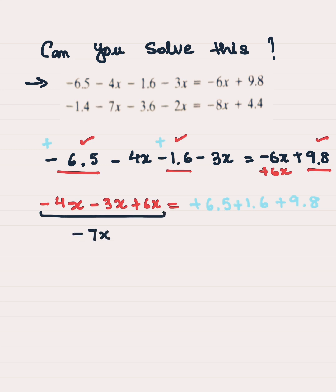The terms with variables are on the left side. If you solve them, you get negative 7x plus 6x. The terms which are just constants are on the right side, and if you add those up, you will get 17.9.